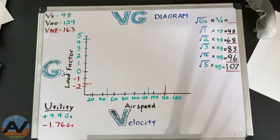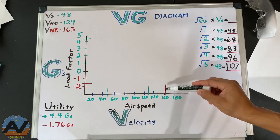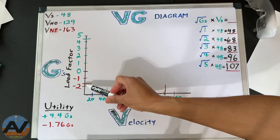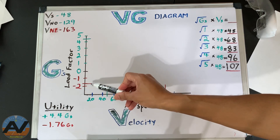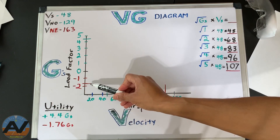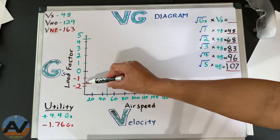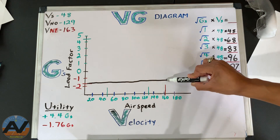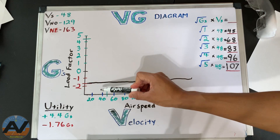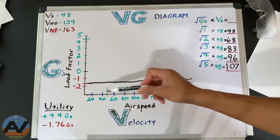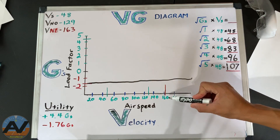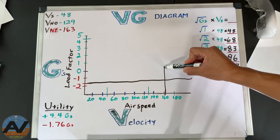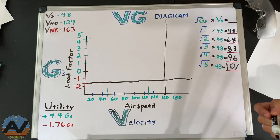What I've done ahead of time is mark little lines on the X-axis and Y-axis. On the load factor axis, I've marked negative 1.76, and I'm going to draw a horizontal line there. If our aircraft is within that range, we're going to expect some kind of structural failure. Over here at 163, that's our airspeed - that's our VNE. So I'm going to draw a vertical line straight up from VNE. And at 4.4 positive Gs, I'm going to draw a horizontal line across.